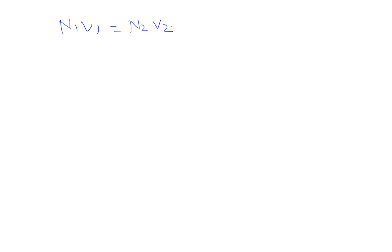Today we will solve numericals of normality. Suppose v1 ml of a solution of normality n1 reacts or neutralizes v2 ml of a solution of normality n2, then n1*v1 = n2*v2. This formula is also called the normality equation.